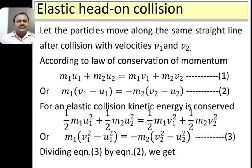Applying the law of conservation of momentum for this collision, we get M1·U1 + M2·U2 = M1·V1 + M2·V2, where the left side is the total initial momentum and the right side is the total final momentum. Taking M1 as common in the first terms on both sides gives M1(V1 − U1), and taking −M2 as common in the second terms gives −M2(V2 − U2). Let this be equation 2.